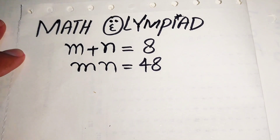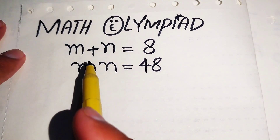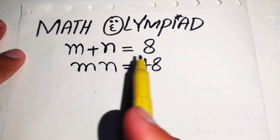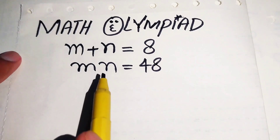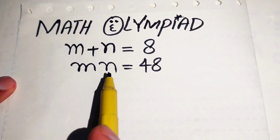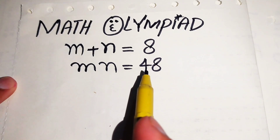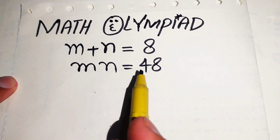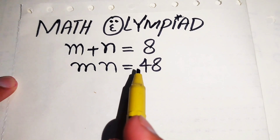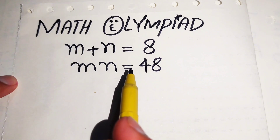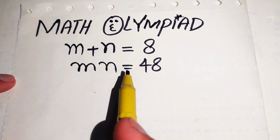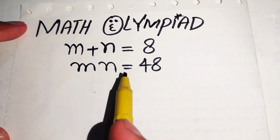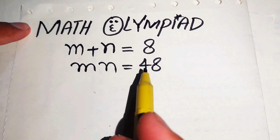Hello everyone, welcome. We will solve this Math Olympiad algebra problem. Here we have m plus n equals 8 and m multiplied by n equals 48, and we solve this problem for the values of m and n.